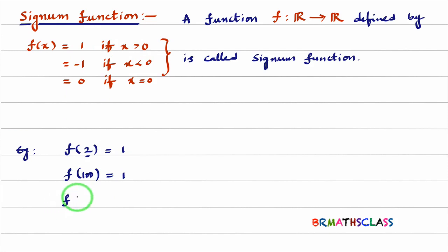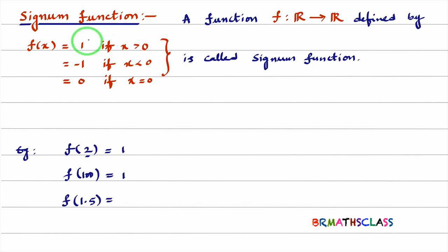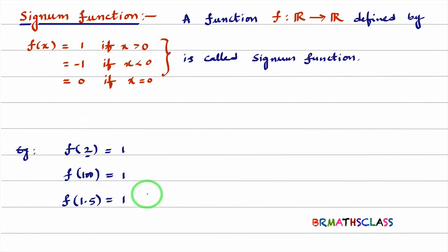f of 1.5 — since 1.5 is greater than 0, we choose the first function. So f of 1.5 is 1. I hope you are understanding.